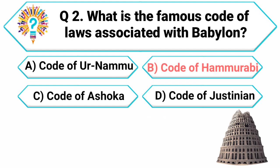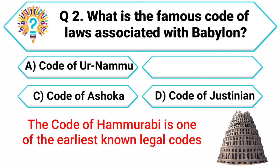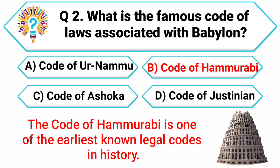Correct answer: B. Code of Hammurabi. The Code of Hammurabi is one of the earliest known legal codes in history. You are on fire. Keep it up.